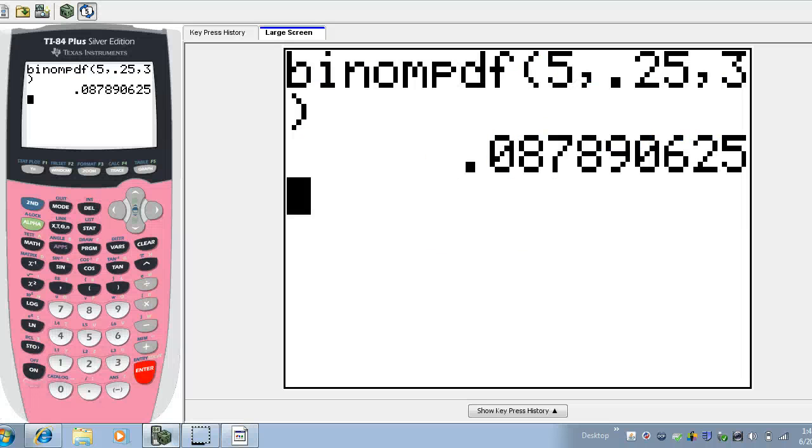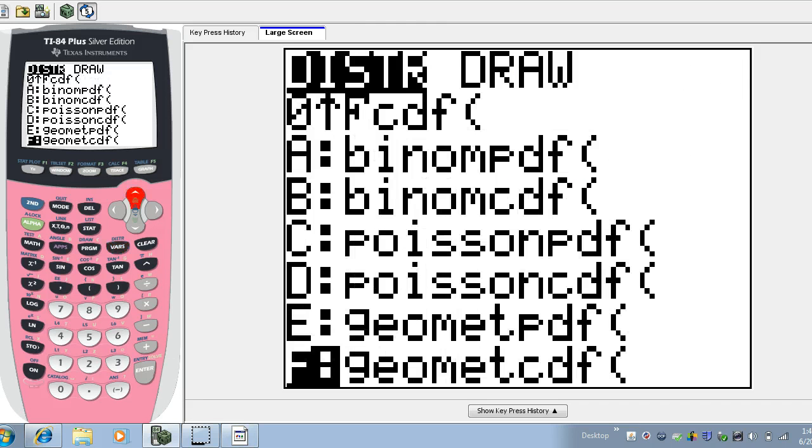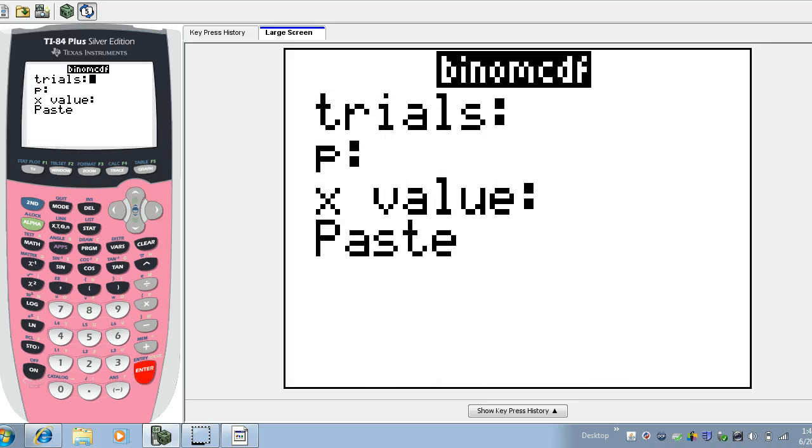So let's go back here to our calculator. We're going to use the binomial CDF command now. And what the binomial CDF command does is it sums the binomial probability from zero successes up to a certain number of successes.